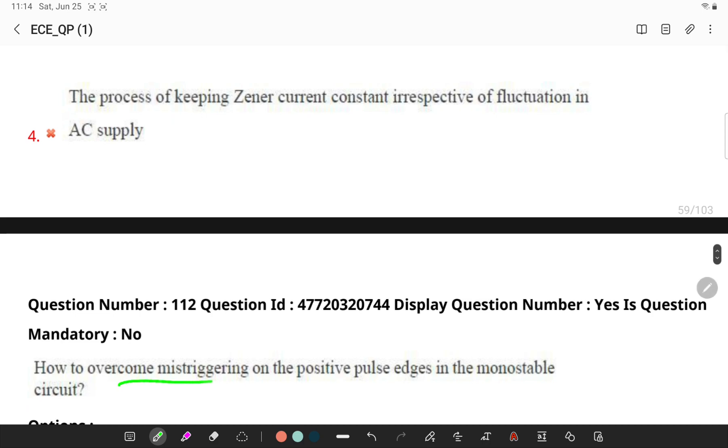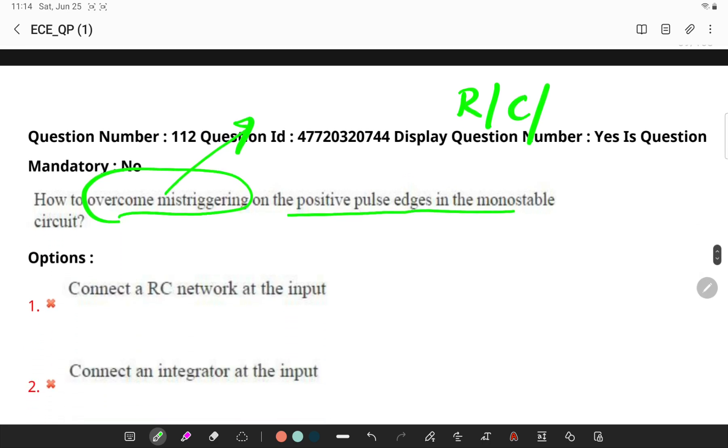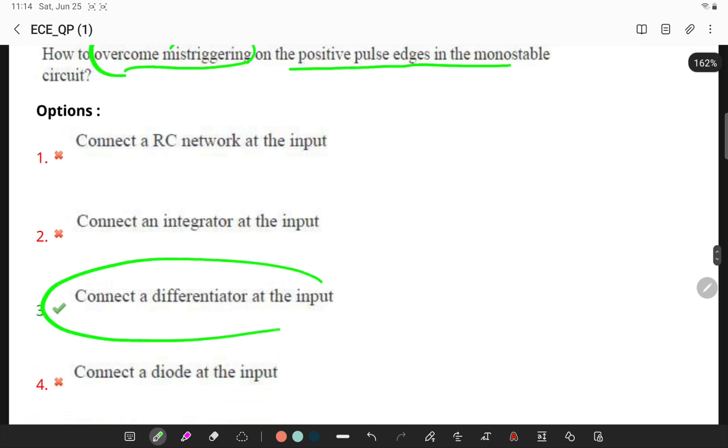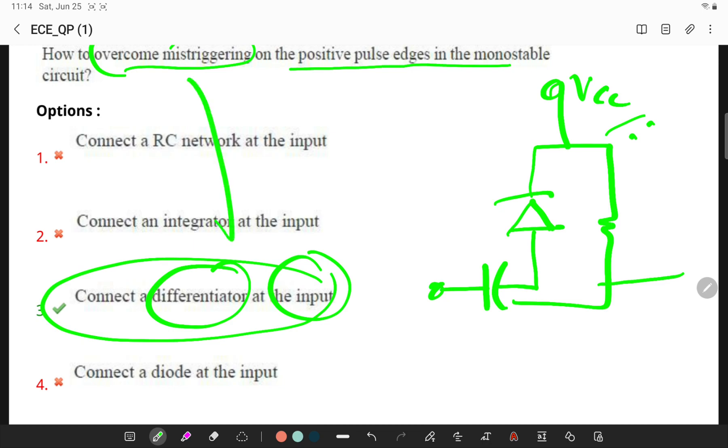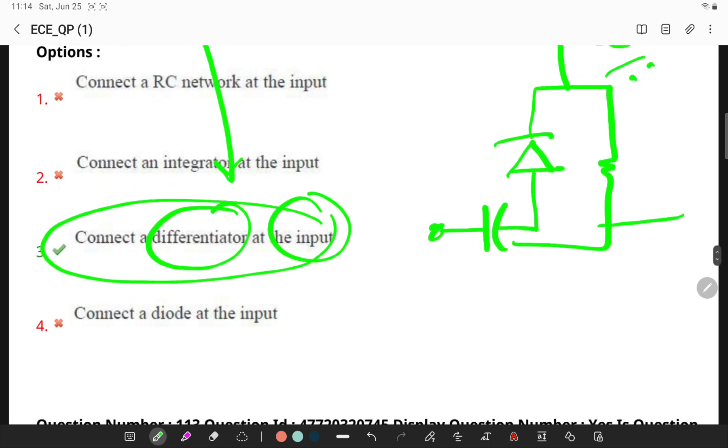How to overcome mistriggering on the positive pulse edges in monostable circuit? To prevent this mistriggering on positive pulse edges, a resistor capacitor combined is applied. Generally in the concept of a differentiation of the input is applied. The circuit will be something like this. You will be applying a differentiator at the input to overcome the mistriggering.